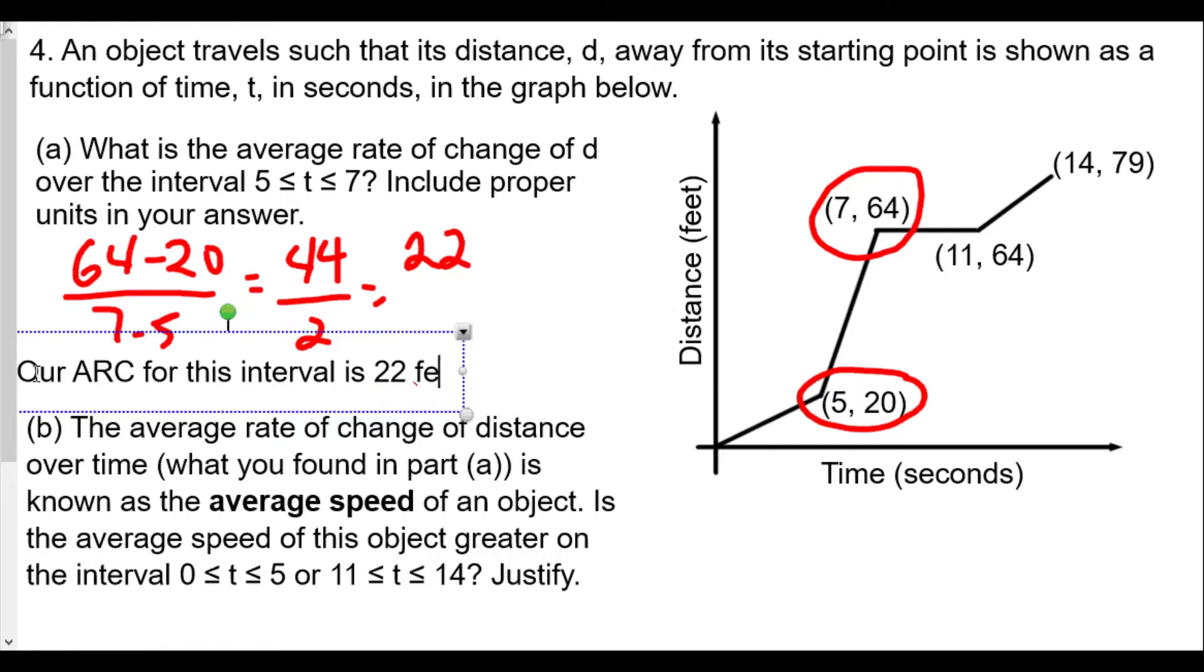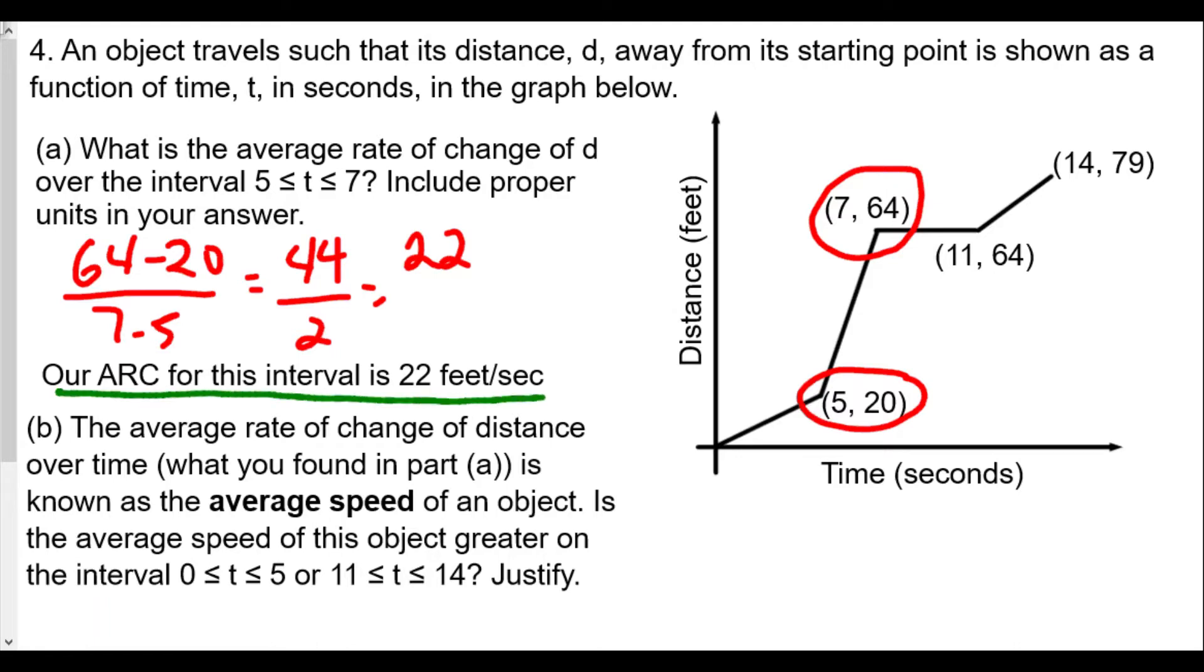The interval is 22 feet per second. Please remember that we are talking about average rate of change. It's a rate. And so the rate for the object in the interval will be 22 feet per second. Make sure you include proper units, feet per second.